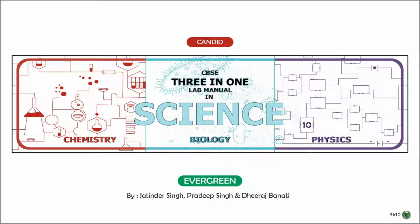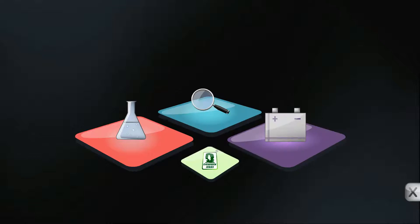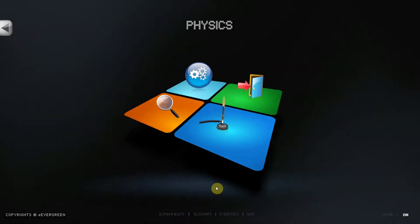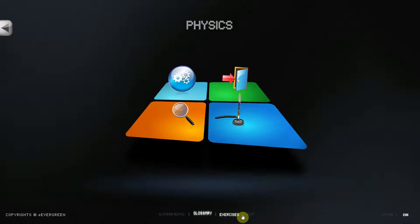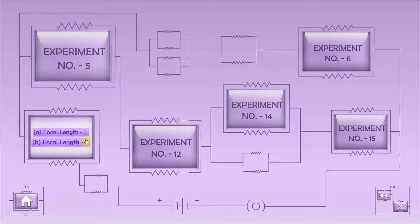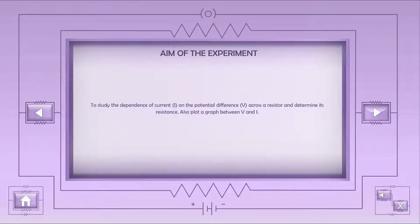CBSE 3-in-1 lab manual in science for class 10th. Aim of the experiment: to study the dependence of current I on the potential difference V across a resistor and determine its resistance. Also plot the V-I graph.